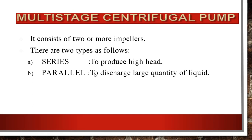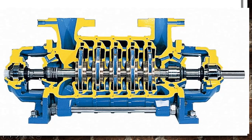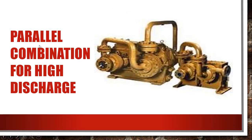A multi-stage centrifugal pump consists of two or more impellers. There are two types: series connection, which is used to produce high head, and parallel connection, which is used to discharge a large quantity of liquid. In series configuration, the impellers are placed in series along the shaft for creating high head. In parallel configuration, the impellers generate high discharge.